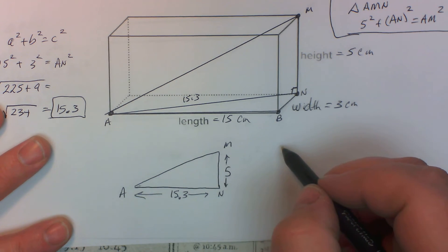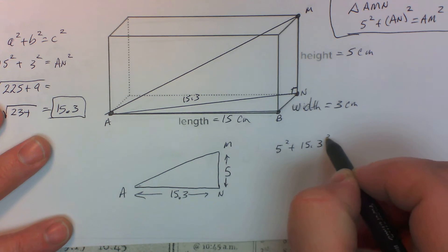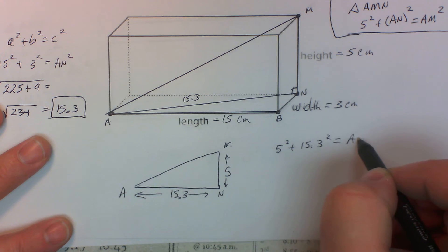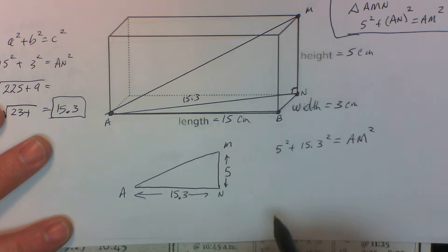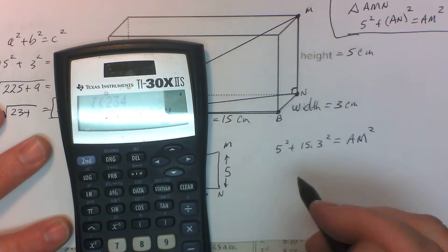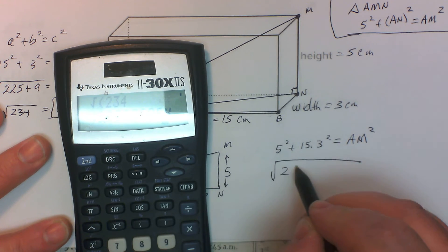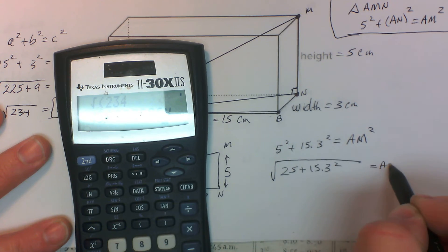So now let's go ahead and set up our formula. So we've got 5 squared plus 15.3 squared equals AM squared. So let's go ahead, 25 plus 15.3 squared equals AM.